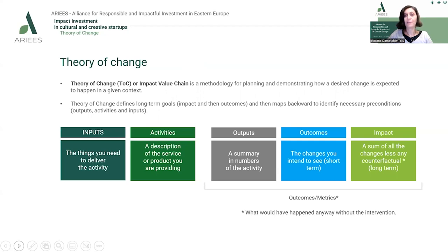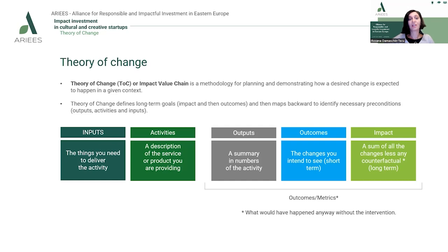The theory of change, or the impact value chain, is a methodology developed to plan and demonstrate how a desired change is expected to happen in a given context. It defines long-term goals, the impact, and then the outcomes, and maps backwards the necessary preconditions to achieve those goals. Those preconditions are outputs, activities, and inputs. Inputs are the resources needed to deliver the activity, activities describe the services or products provided and how they are carried out, and outputs are a summary in numbers of the activities carried on.